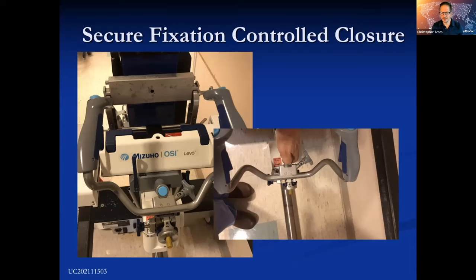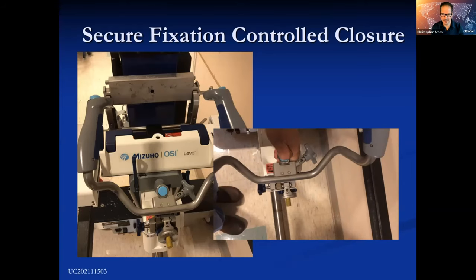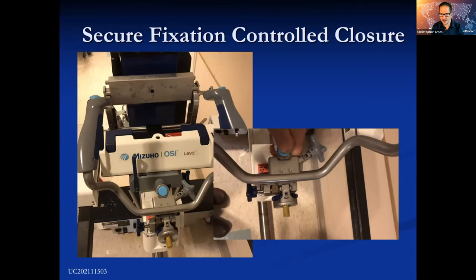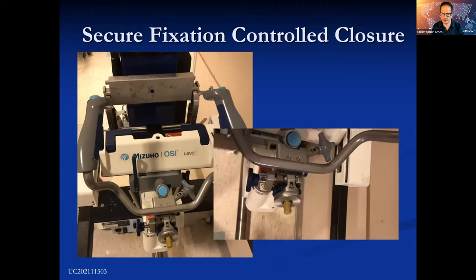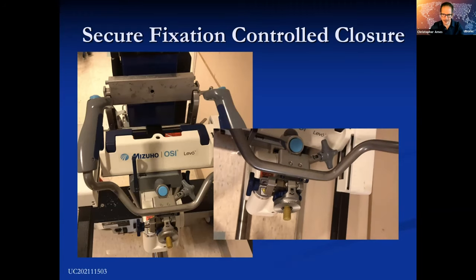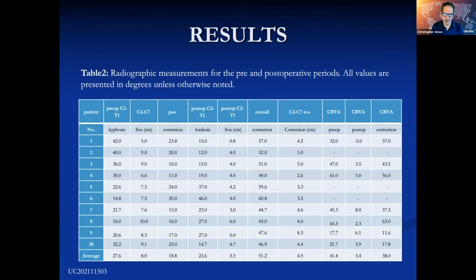This is a Mitsuho attachment — I have no financial relationship with that company — but it's very useful for correcting head position at surgery. Literally, we reach down; it's like power steering. We hit the button and can lift the head up and down. That's how we close the osteotomy in conjunction with some cantilever force on the rod. We get about 19 degrees of correction with a C7 PSO.